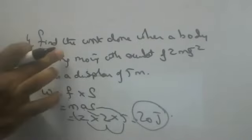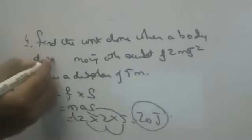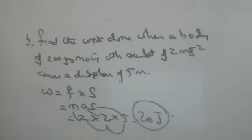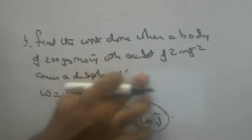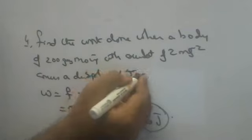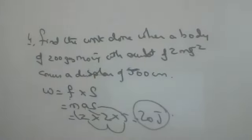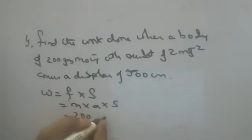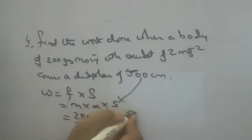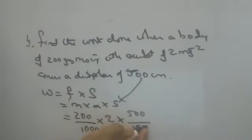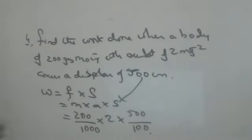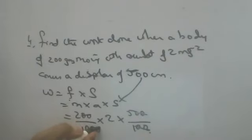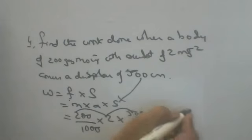Suppose the same question uses 200 grams instead of 2 kg and a displacement of 500 centimeters. Same formula: W = M × A × S. Mass is 200 grams — convert by dividing by 1000. Displacement is 500 centimeters — centimeters to meters, divide by 100. The two zeros cancel, giving 2 × 2 × 4 = 20, then 20 ÷ 10 = 2 joules is the answer.